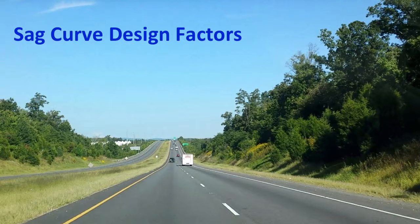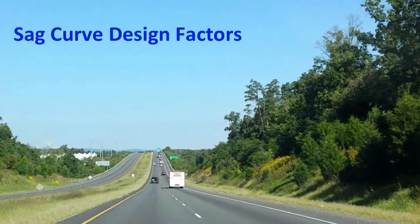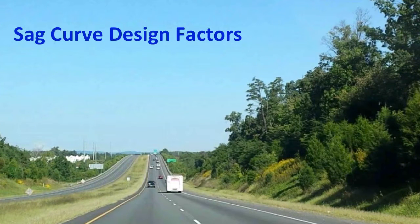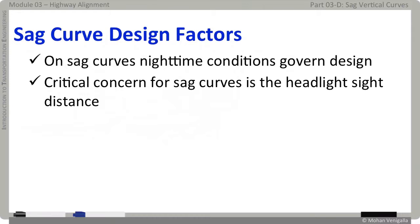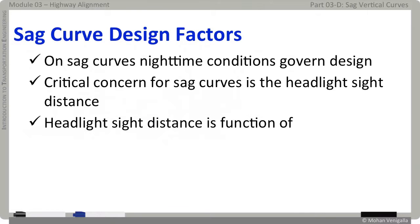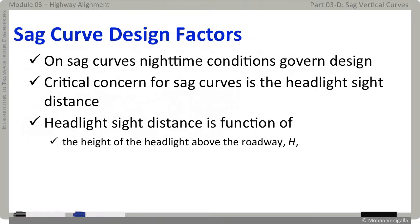When it comes to sight distance on sag curves during daytime — seeing is believing. SSD is unrestricted on sag curves during daylight hours. Therefore, nighttime conditions govern design, and thus the critical concern is headlight sight distance — that is, the length of road illuminated by the vehicle's headlights — which is a function of the height of the headlight and the upward angle of the headlight beam.